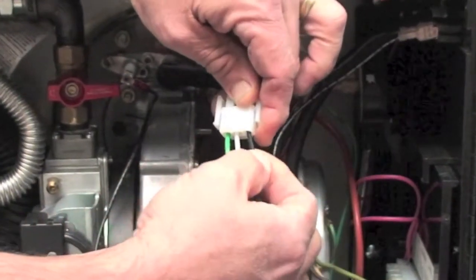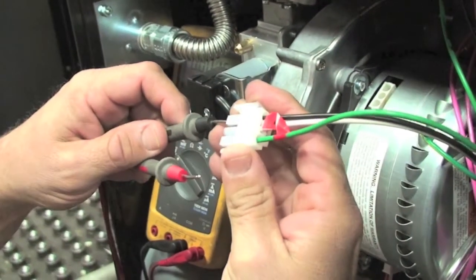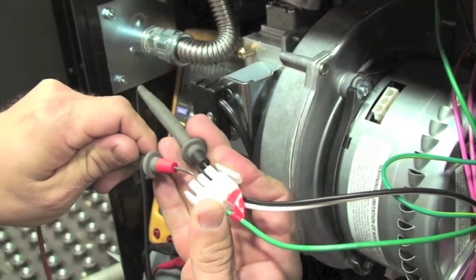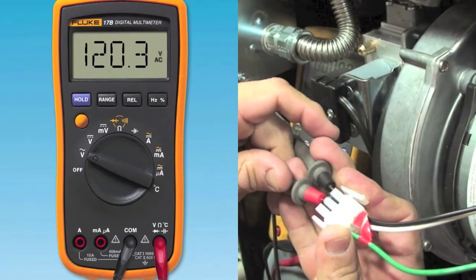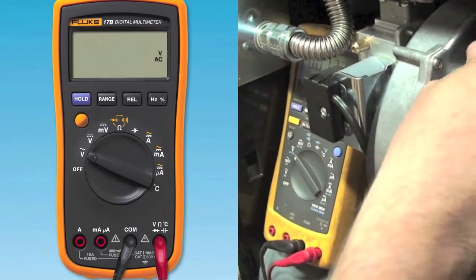Second, check the power coming into the fan by disconnecting the Molex plug with the white, black, and green leads and measure the line voltage to the fan with your electrical meter. Turn your meter to measure AC voltage coming out of the plug to assure we have power from the control.